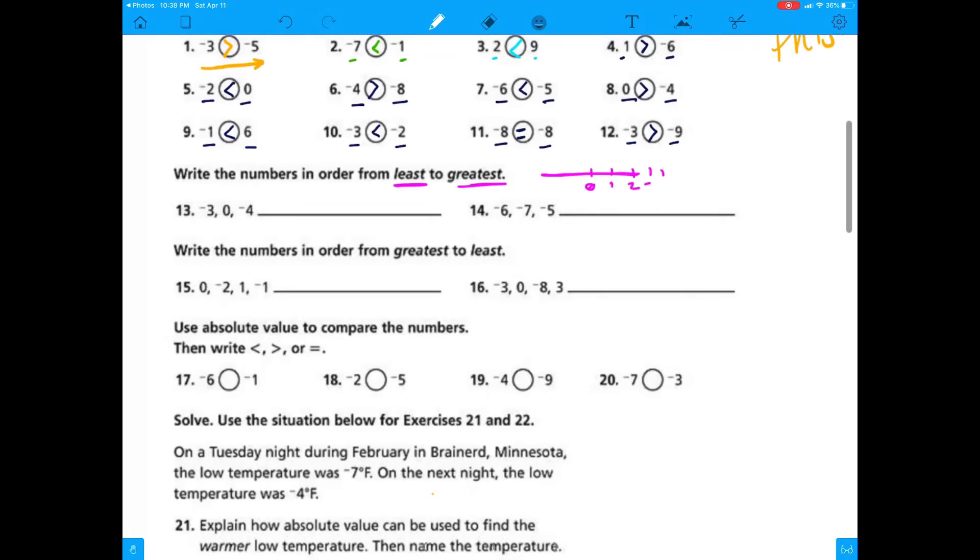Alrighty, we're going to be using these numbers and a number line to order from least to greatest. So the smallest number to greatest. Don't follow your gut instinct of saying, oh yeah, 0 is the smallest. Because in number 13, we have two negative numbers. So I already know, boom, 0 right there is actually going to be the greatest.